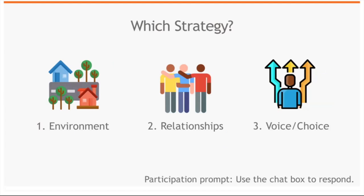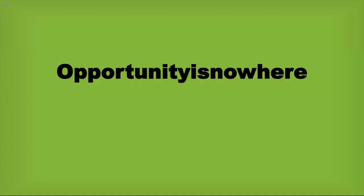Which strategy really resonated with you? If you had to pick something to go back to your site and work on, would it be the environment piece — taking a look at what you have available, maybe doing some resource mapping? Or is it the relationship piece — deepening relationships and bringing in activities to move folks along the continuum toward more engagement? Or is it the voice and choice component — connecting and collecting more feedback, incorporating more ideas, and being more intentional about building that in?